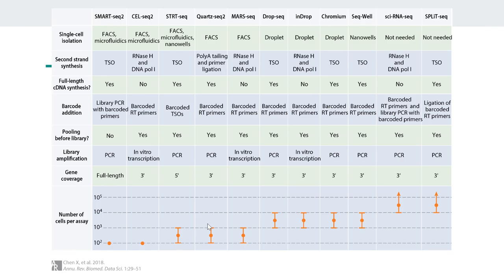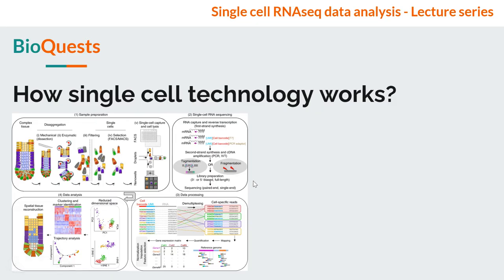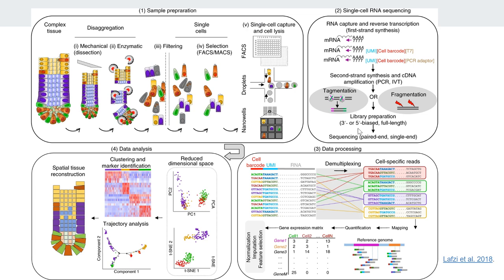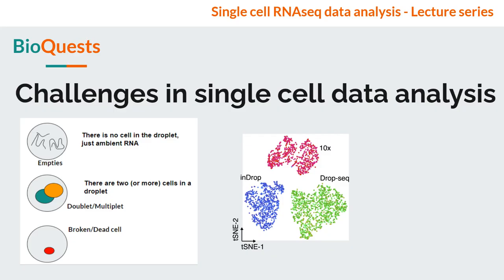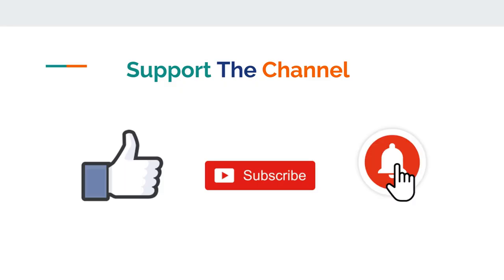In summary, this video covered the different steps of single cell RNA sequencing: capturing cells using various methods, and in the case of droplet-based approaches, adding cell barcodes and UMIs before sequencing; then reversing the process computationally through demultiplexing, deduplication, mapping, and counting to get the count matrix; and finally performing downstream analysis. The next video will discuss the challenges and errors commonly encountered in single cell data, since no platform is perfect. Please like, share, and subscribe — see you in the next video, thank you!